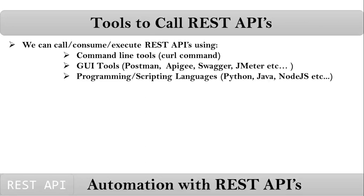You can use the curl command on all operating systems. And suppose if you want to execute or test your REST APIs from GUI tools, then we have different types of GUI tools like Postman, Apigee, Swagger, JMeter, and some other tools as well. The same way, you can execute your REST APIs even using programming or scripting languages like Python, Java, Node.js, and others.